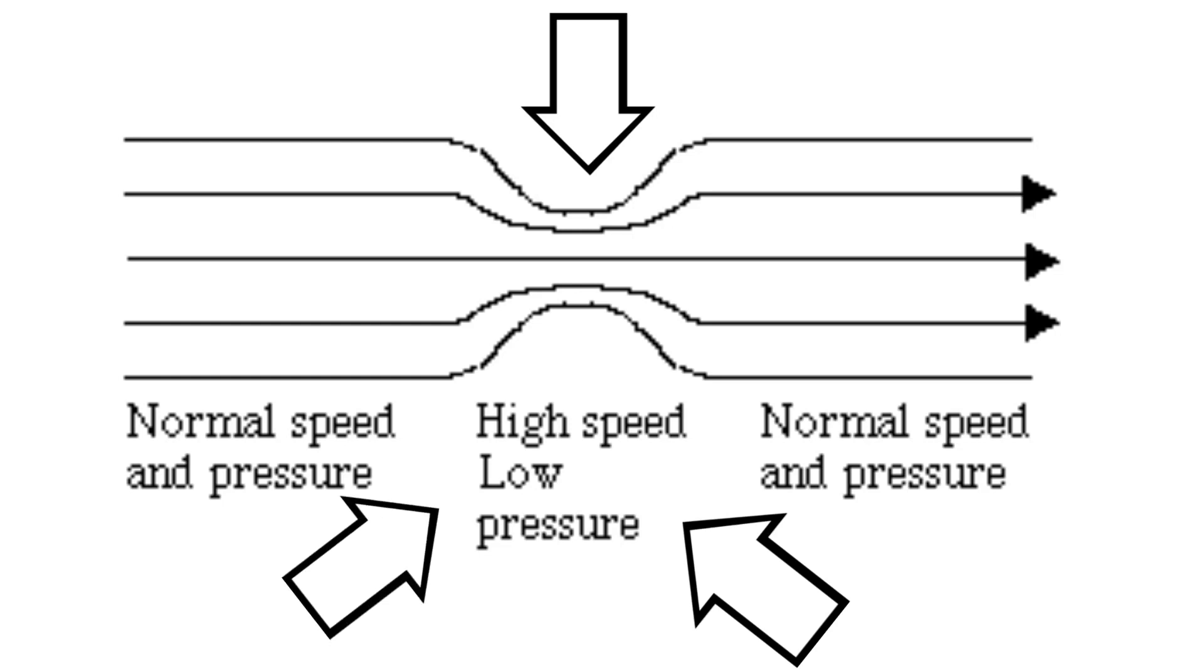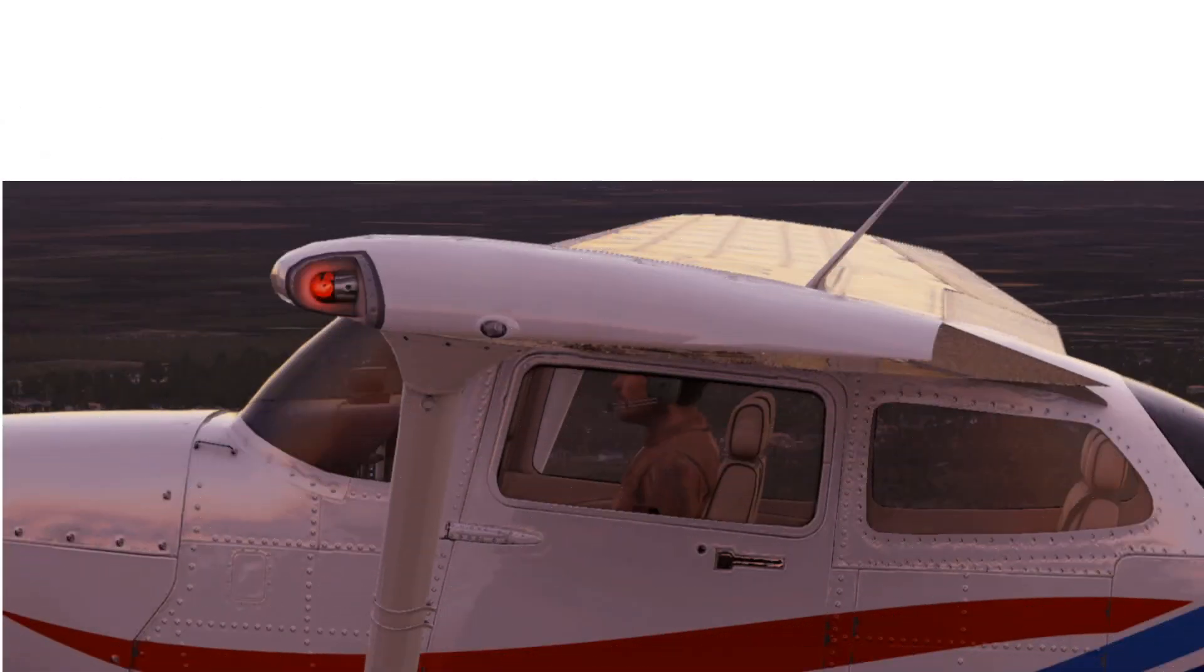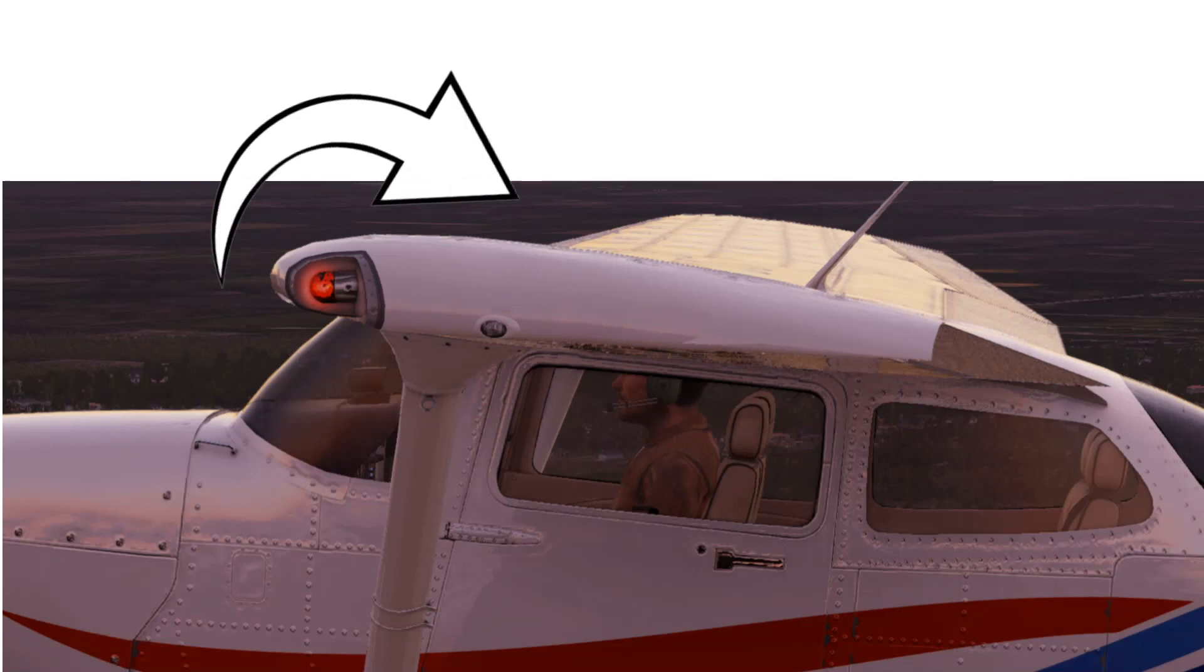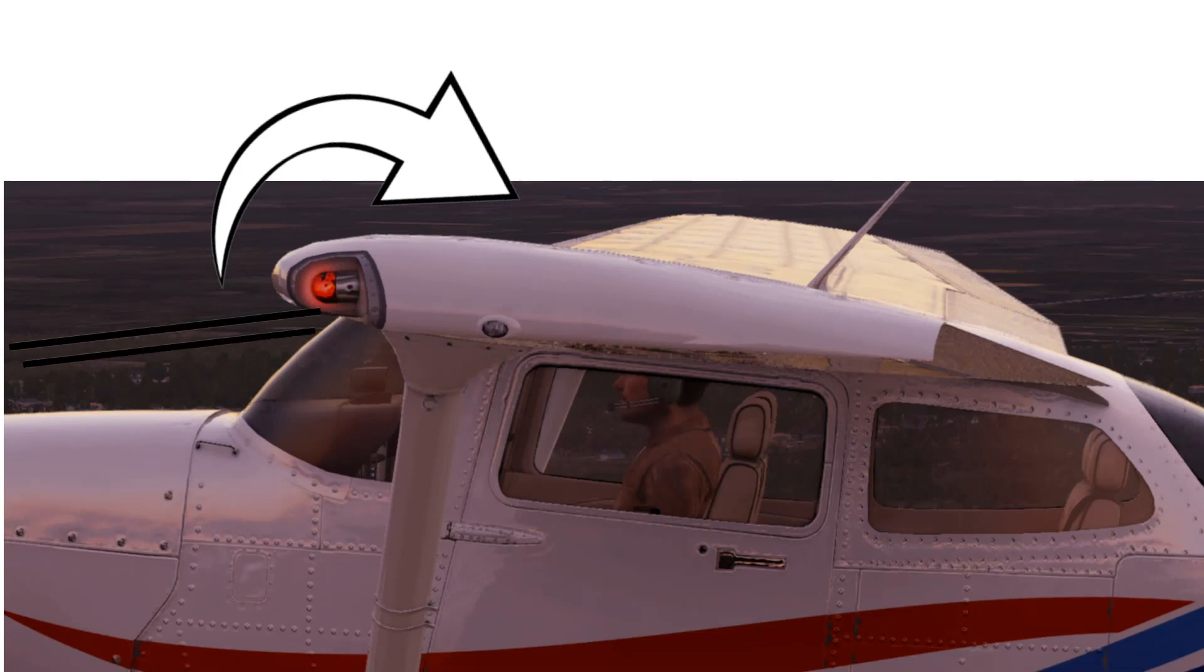So, how does this apply to aviation? Let's consider an airplane wing. When the airplane is in flight, the curved shape of the wing and the angle at which the air meets the wing causes the air to flow faster over the top of the wing than underneath it.